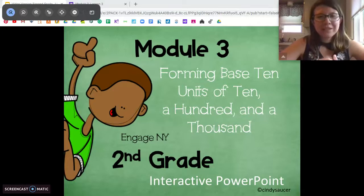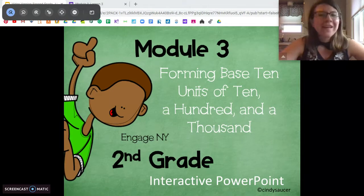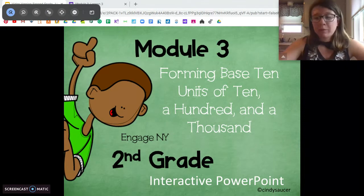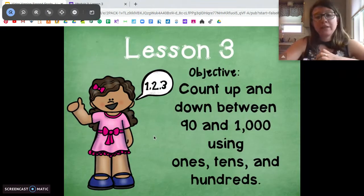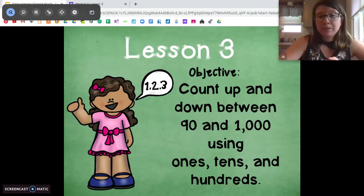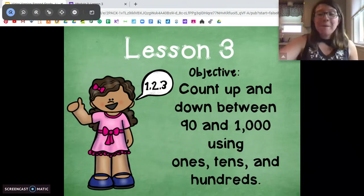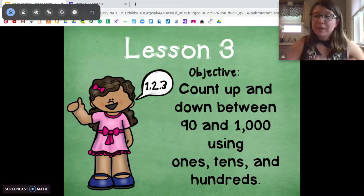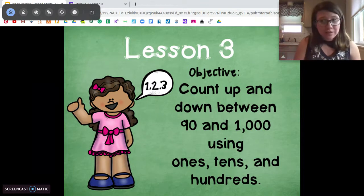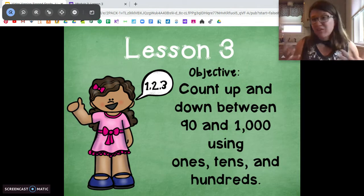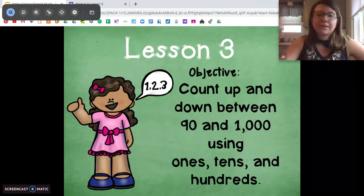Second graders, Ms. DiOrio here from Citizenship Academy with your third lesson of Module 3. And today we're still working within base 10, so those units of 10, 100, and 1,000 we've been working with. Today our objective is to count up and down between 90 and 1,000, huge number. But remember, we're going to use those bundles of hundreds, tens, and ones to count a more efficient way, to count faster. We're going to practice that today.